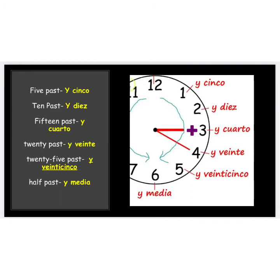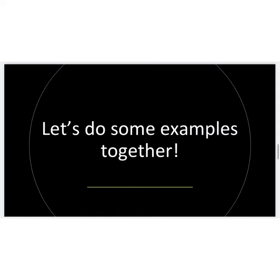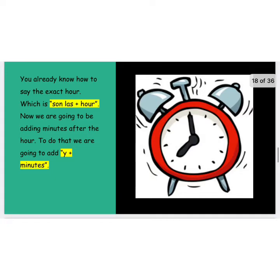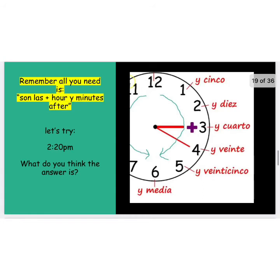Entonces estudiantes — therefore students — to express minutes after the hour in Spanish, all you need is the E followed by the number of minutes after. You already know how to state the exact hour in Spanish, which is son las and then you put the hour you are talking about. So all we're going to do now is add E followed by the number of minutes after that particular hour. All you need is son las, you put the hour, then you put E followed by the number of minutes after the hour.